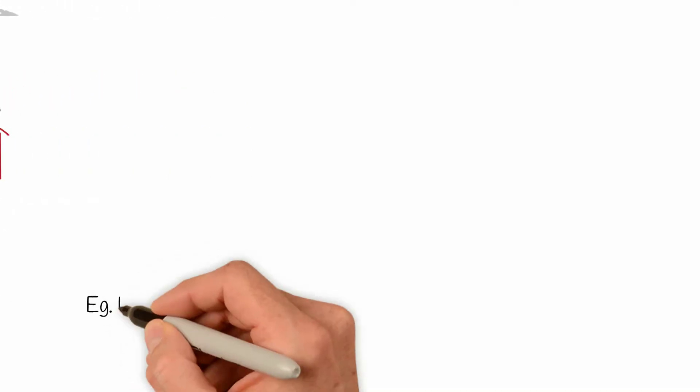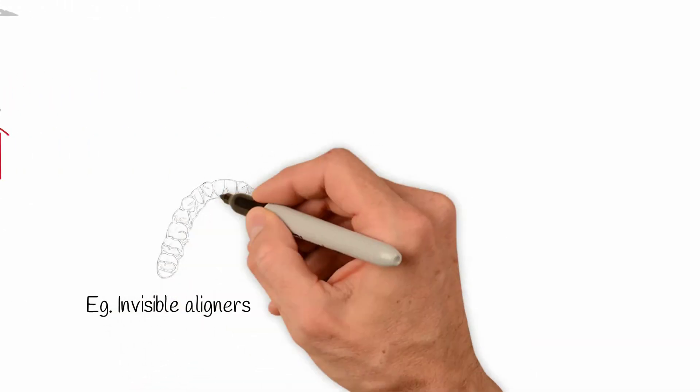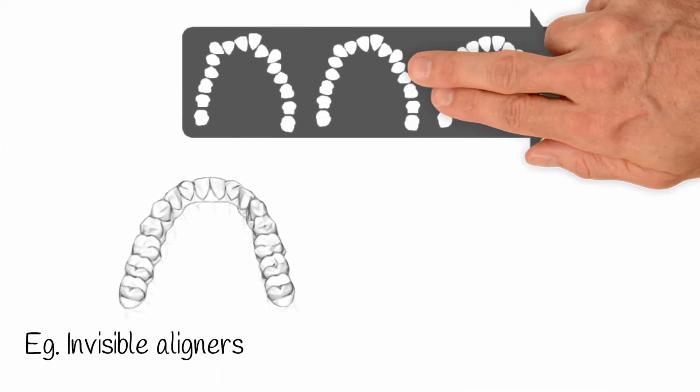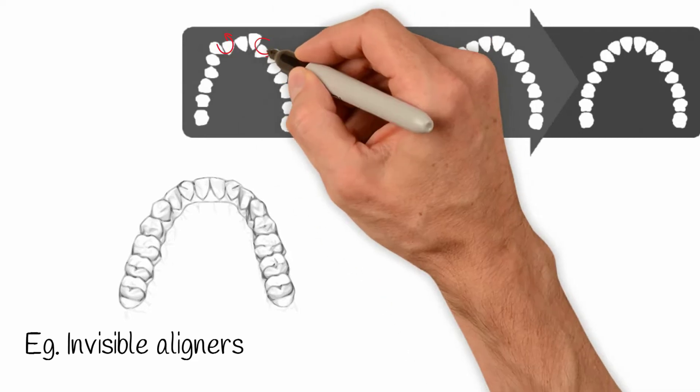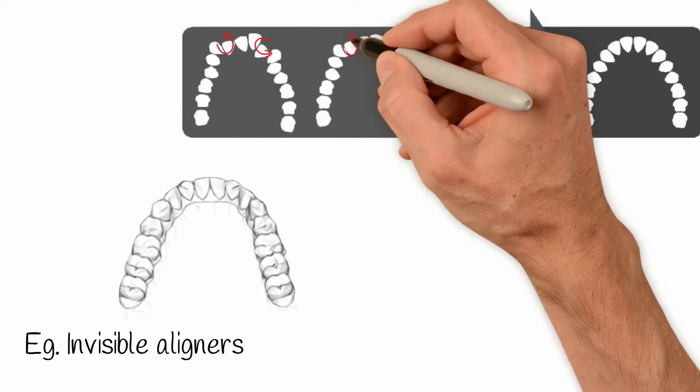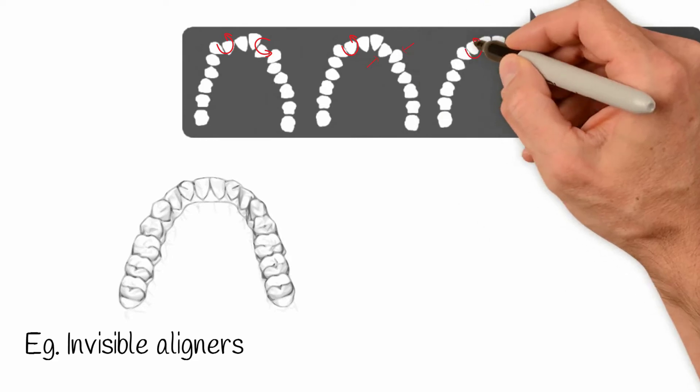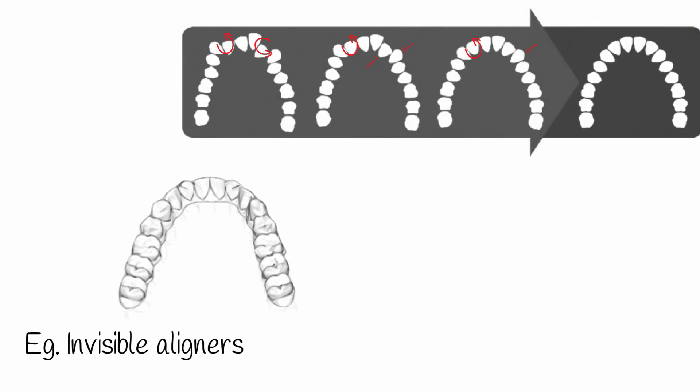Other examples of appliances that are force-driven include the invisible aligners. Their main target is the application of controlled forces to perform specific dental movements. That is, if there is no appropriate planning of the desired sequence of the movements, the treatment with the aligner will certainly not succeed.